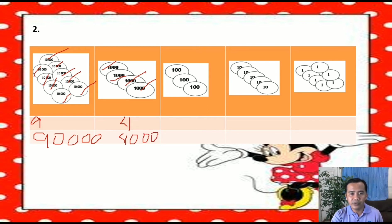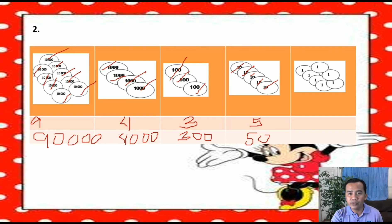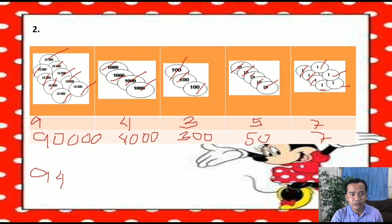How many 100 disks do we have? 1, 2, and 3 — we have 3. That is 300. How many 10s do we have? 1, 2, 3, 4, 5, 6, 7 — we have 7. So 90,000 plus 4,000 plus 300 plus 50 plus 7 equals 94,357.